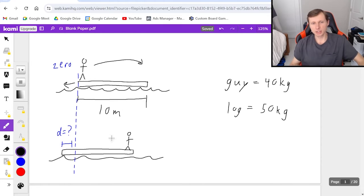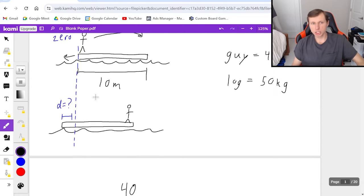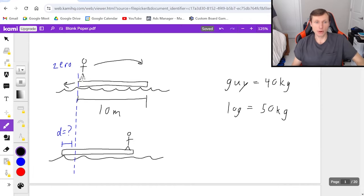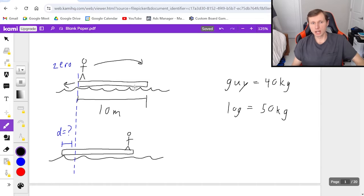X center of mass equals mass 1 which we'll say is the person 40 times his position. His position is he's at the zero at first. This is all the initial. So position zero and then plus mass 2 which is the mass of the log 50 times the log's position. Now most of my students say that the log's position is 10 because the whole thing is 10 meters long. But that's wrong. We're considering the log as a point source of mass located exactly in the middle. This is what we always do.